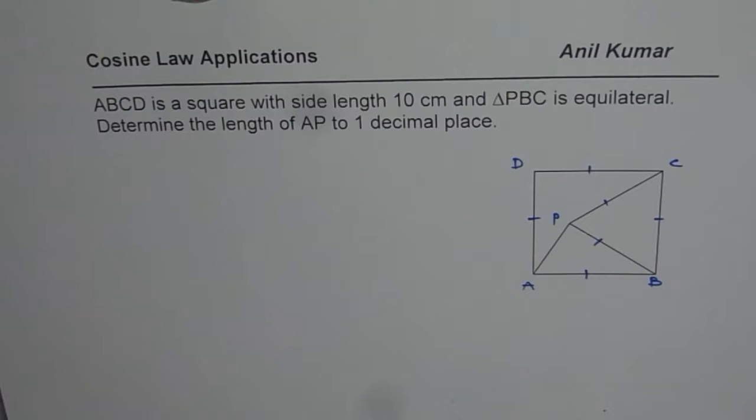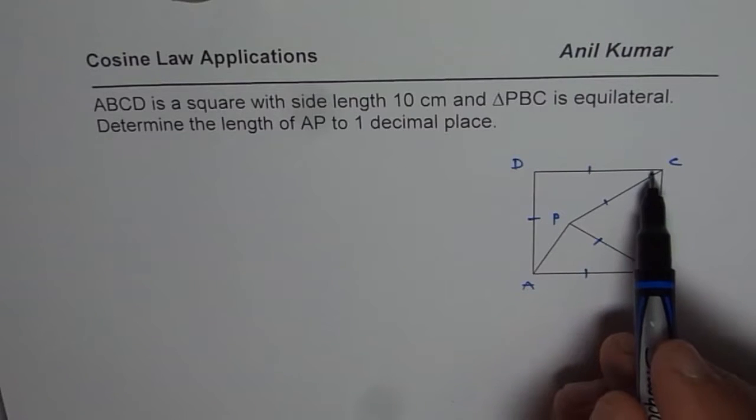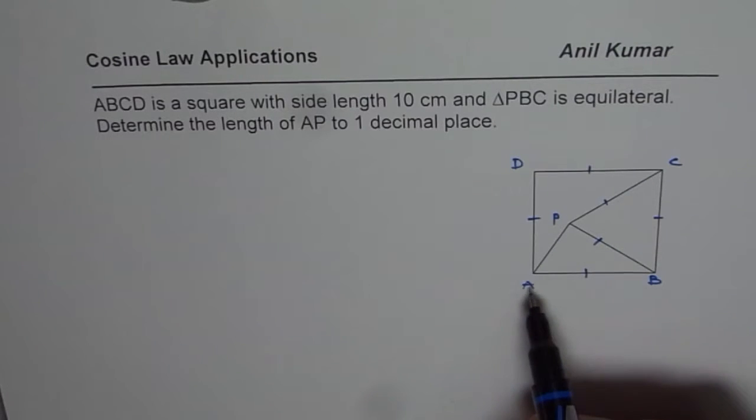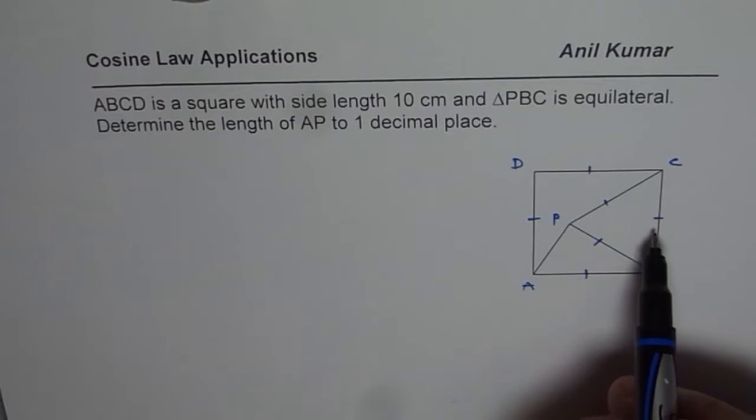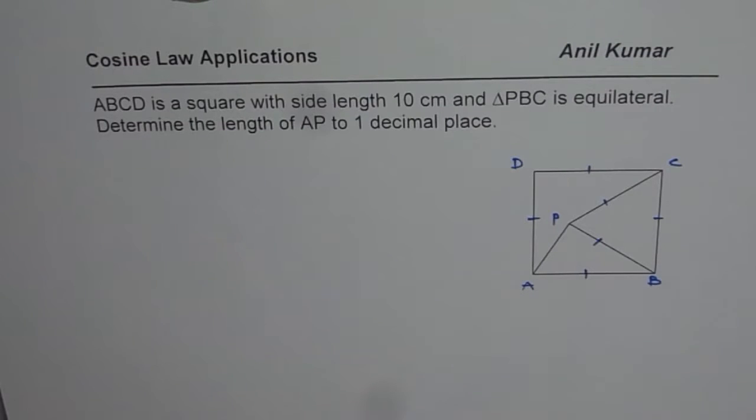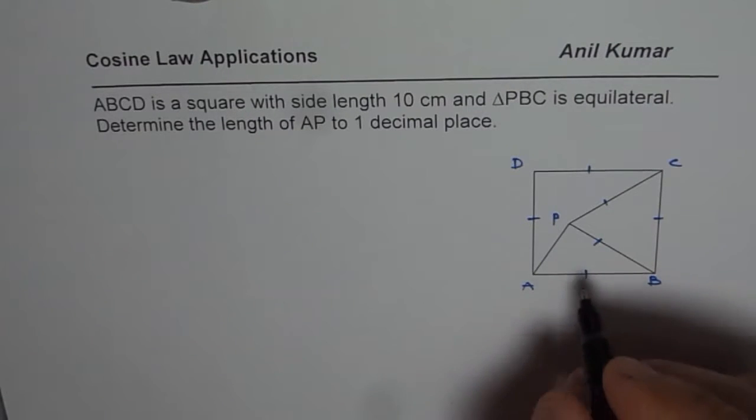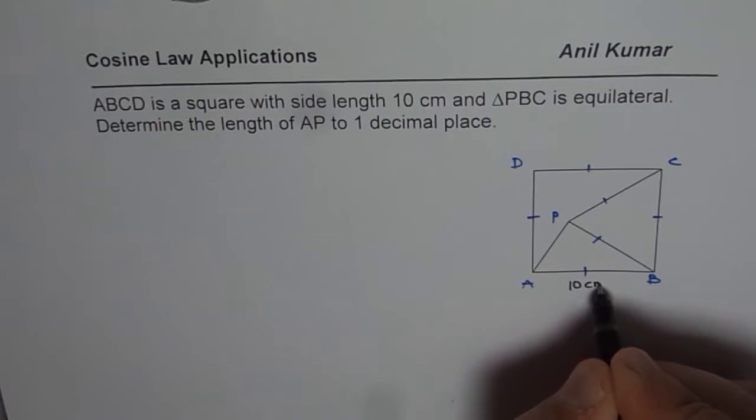Determine the length AP to one decimal place. So here is the square, that means these are all 90 degrees and the sides of the square are 10 cm. Let's write it down. The side of the square is 10 cm. So this is 10 cm for you.